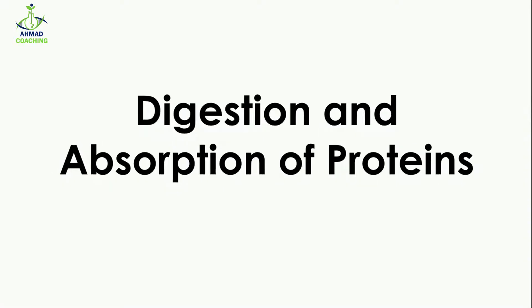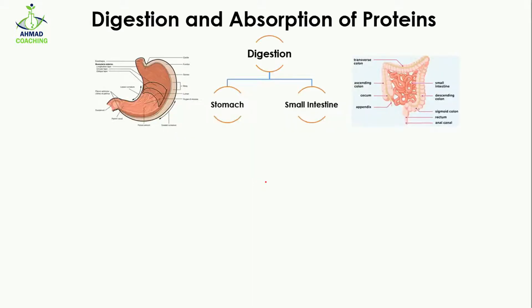Welcome to Amat Coaching. I'm your teacher Dr. Anam. Today we will study the digestion and absorption of proteins. The food we consume consists of protein, and in the human digestive system there are two sites where the digestion of protein takes place: one is the stomach and the other is the small intestine. The rest of the digestive system is not involved in protein digestion.